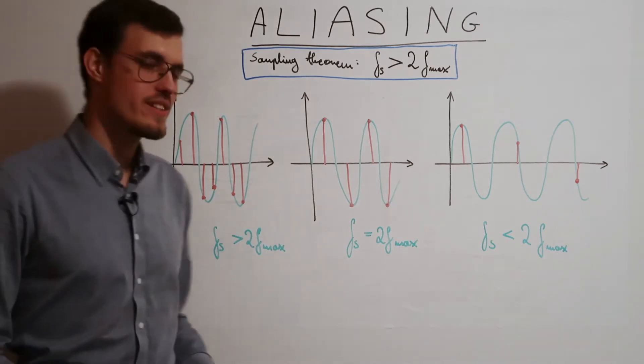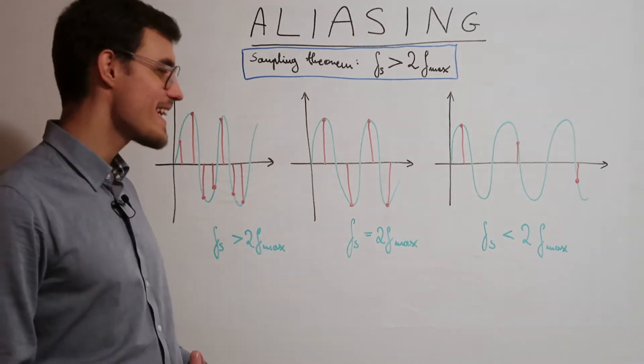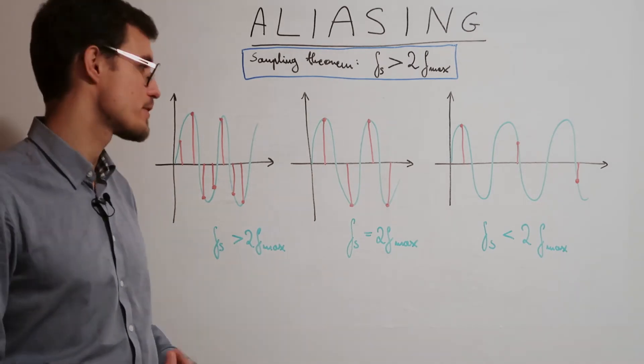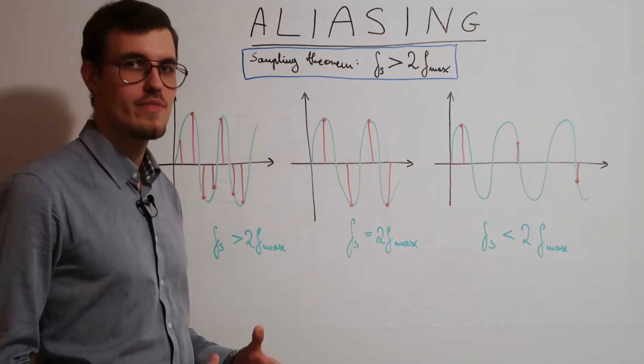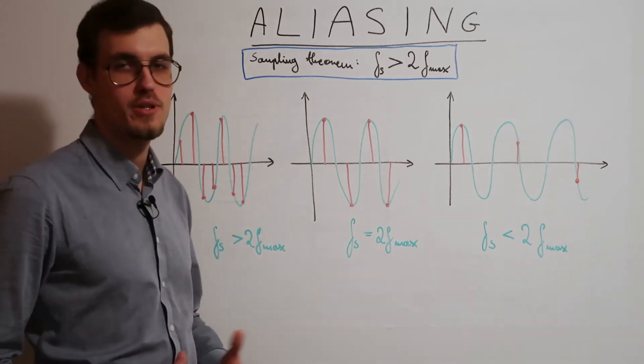In the case when the sampling rate is exactly equal to two times the maximum frequency, we have to be lucky in order to receive proper samples. And in this case we are.